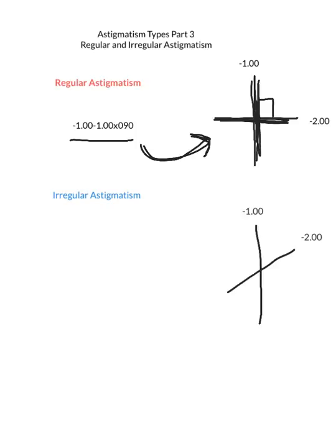Irregular astigmatism is not normal to have. It's when the vertical meridian and the horizontal meridian are not 90 degrees apart, and it cannot be corrected with normal eyeglass prescription or contact lens prescription.